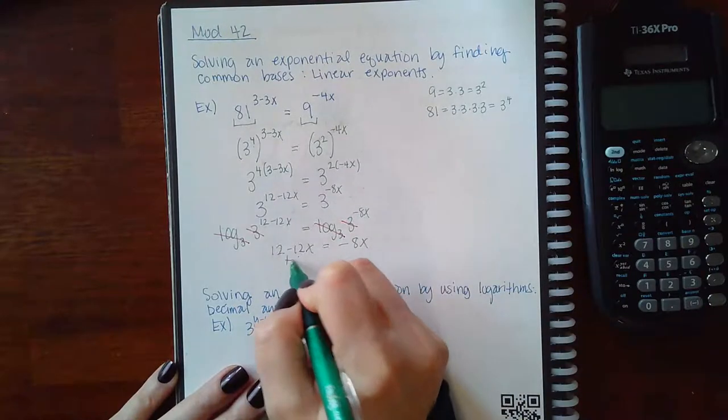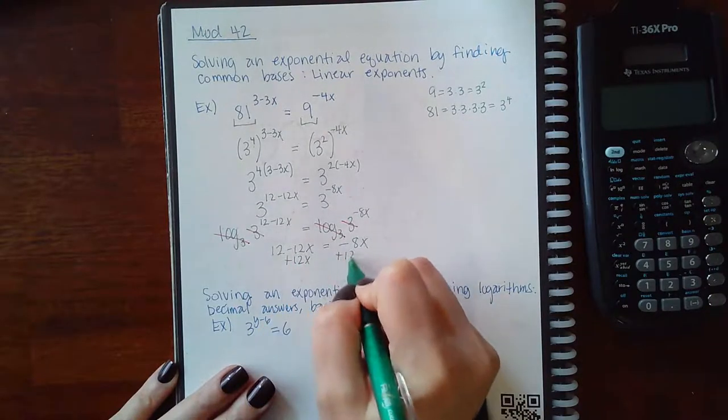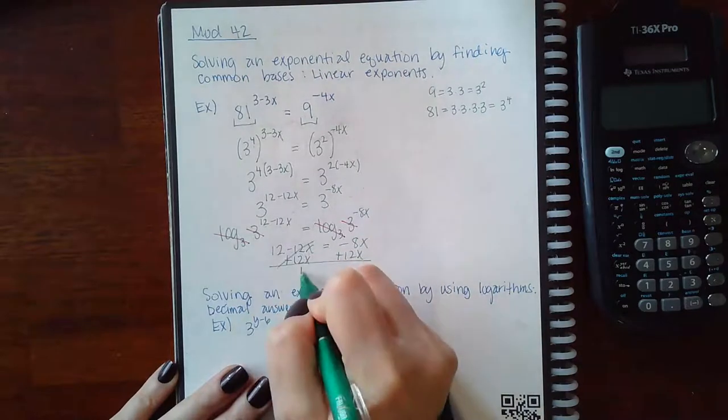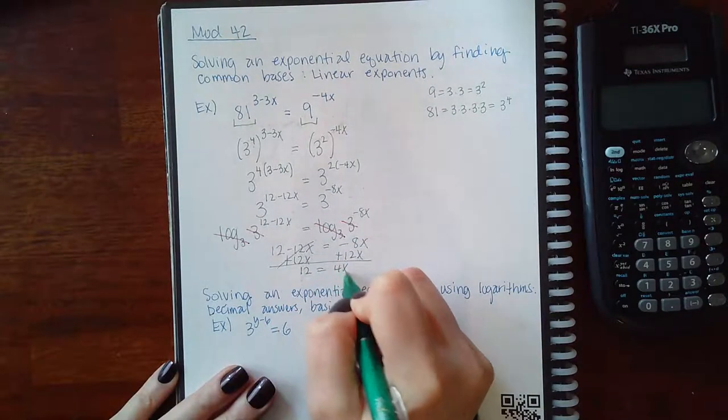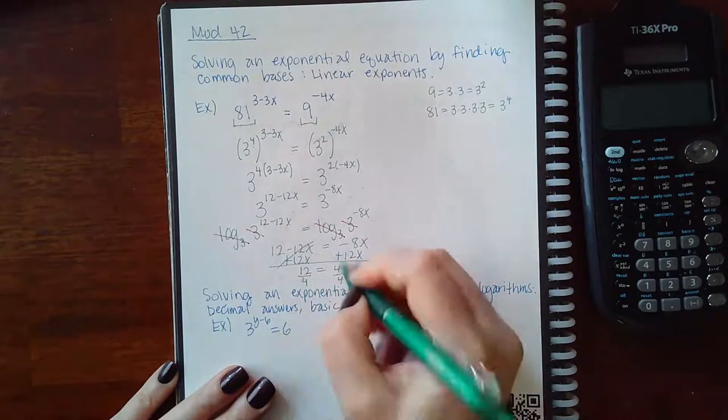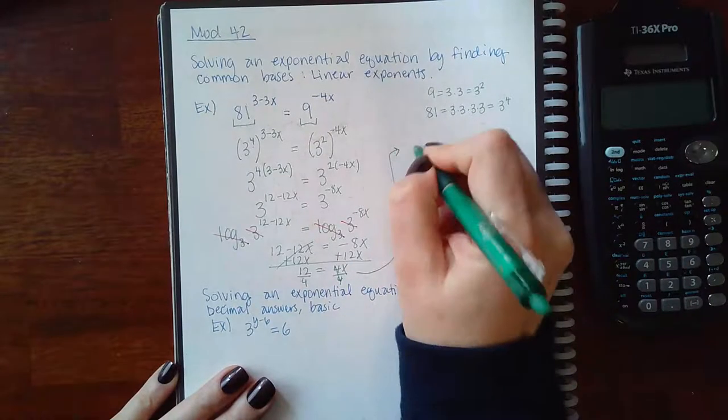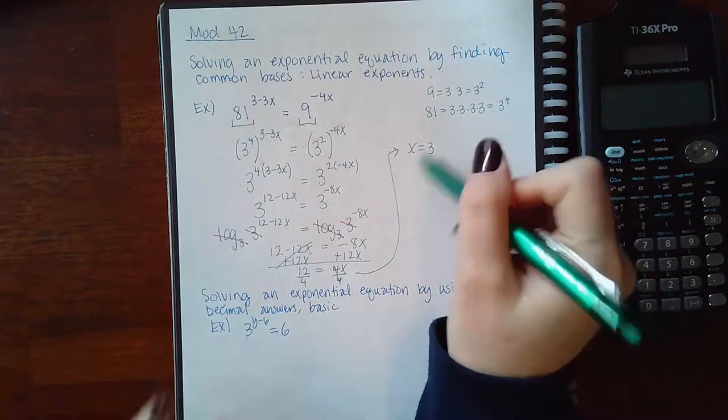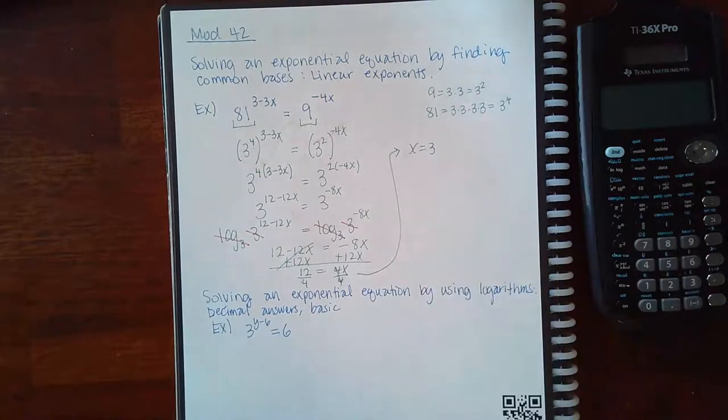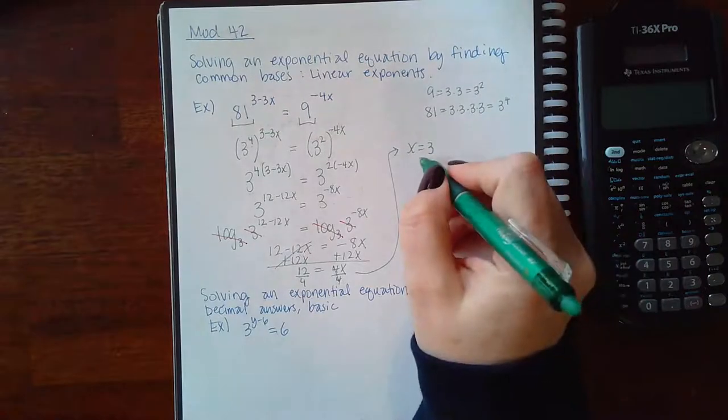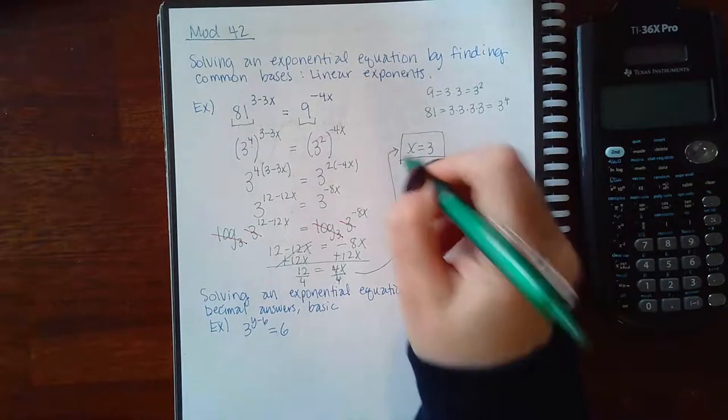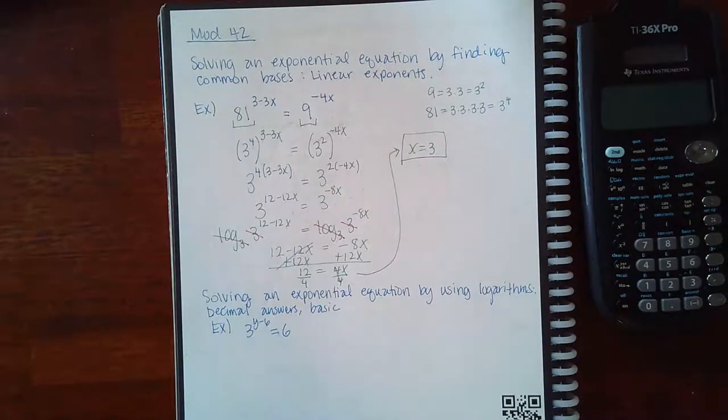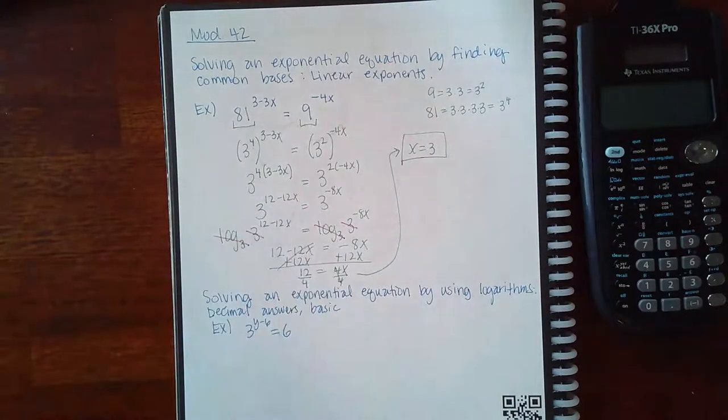So then if I add 12x over, I get that 12 equals 4x divided by 4 divided by 4. I get that x equals 3. Now there is no rule on whether or not an exponent can be negative. So it is not necessary to check this answer. I can assume that this answer is correct, just so long as all of my steps were correct.